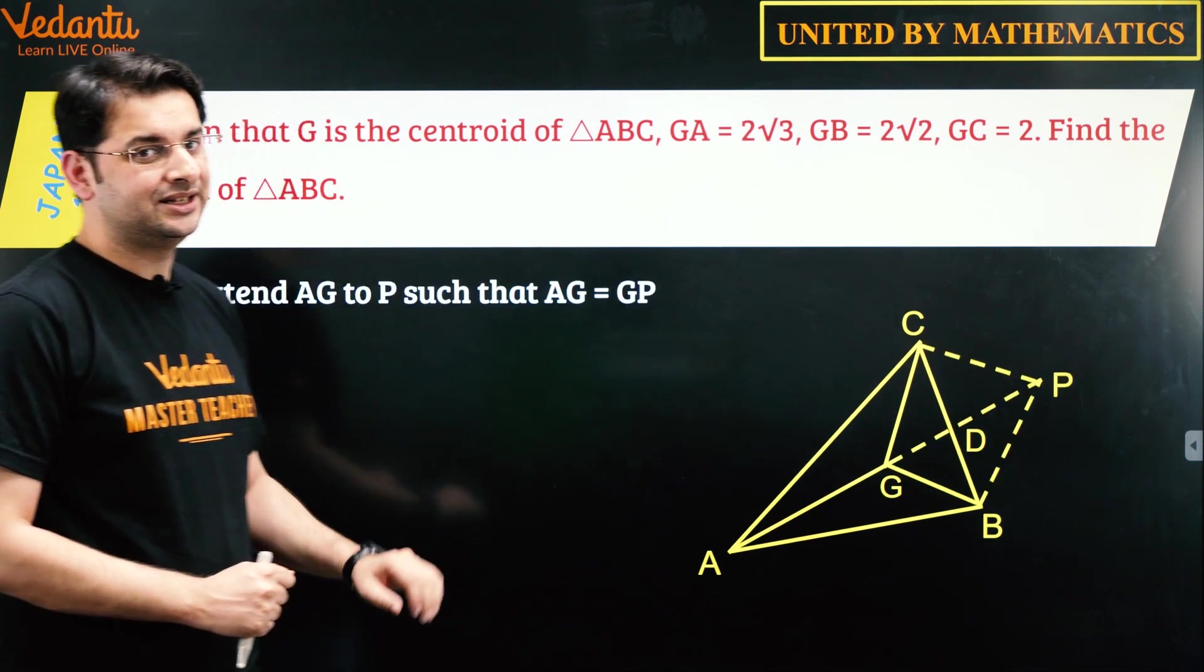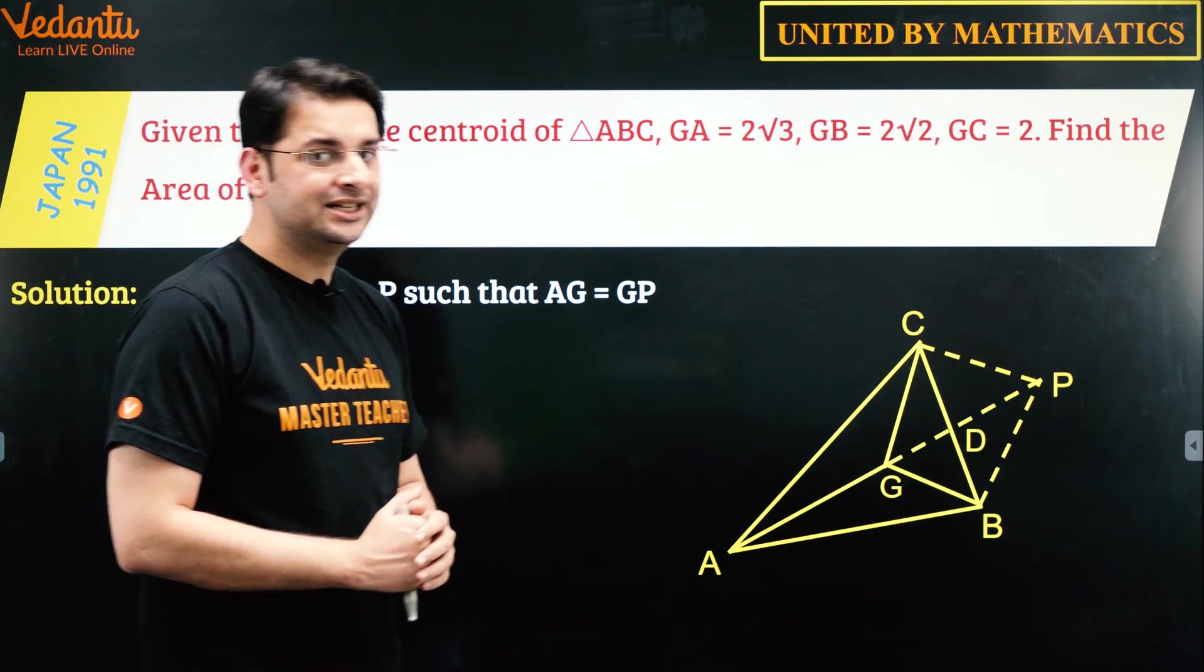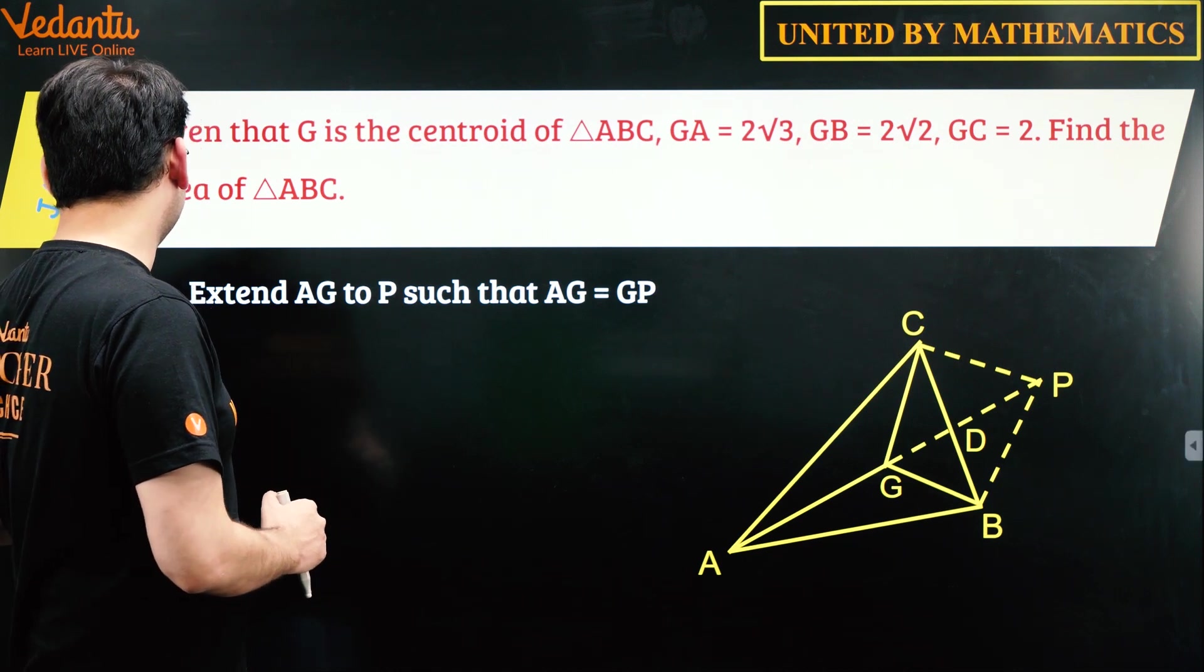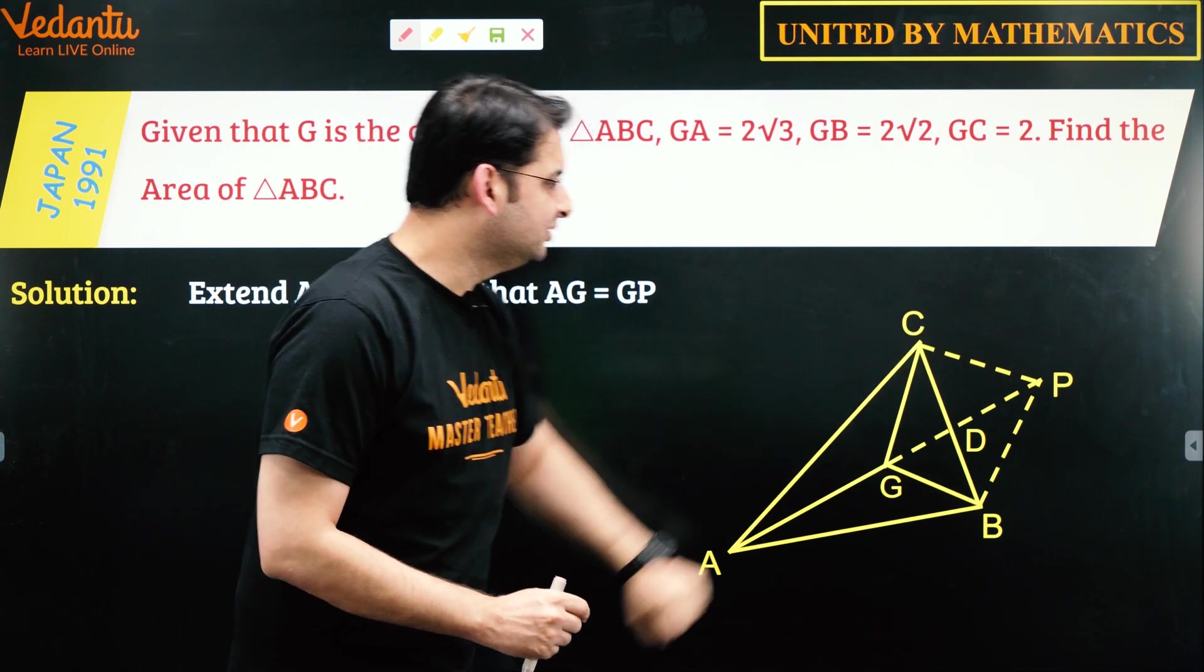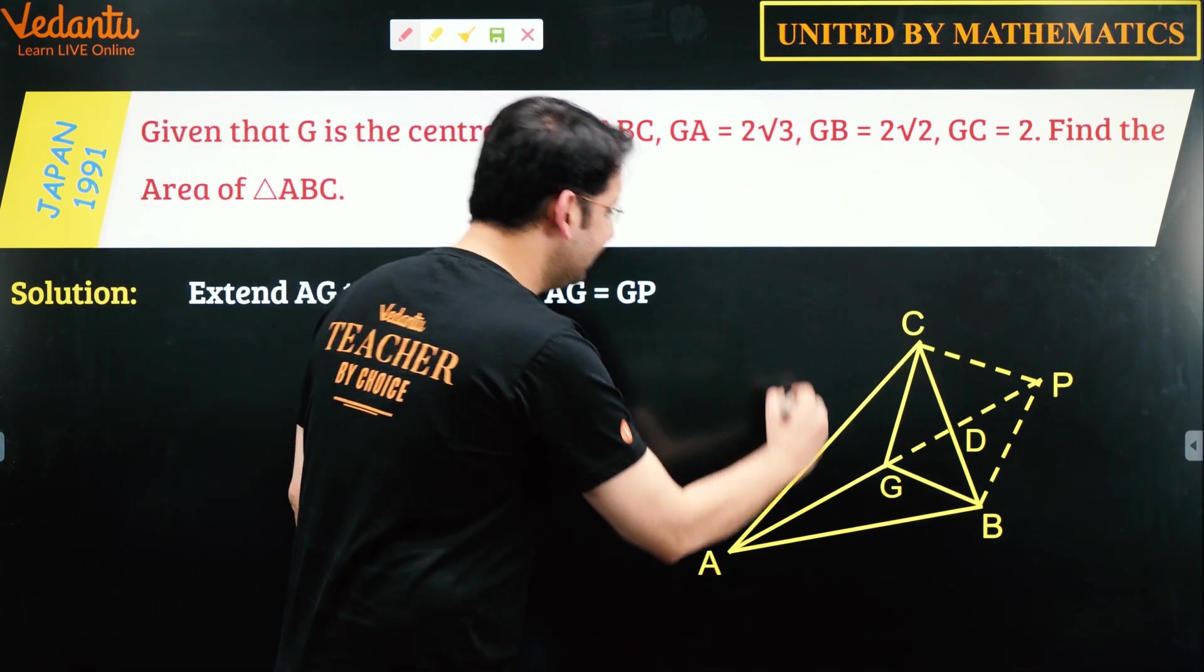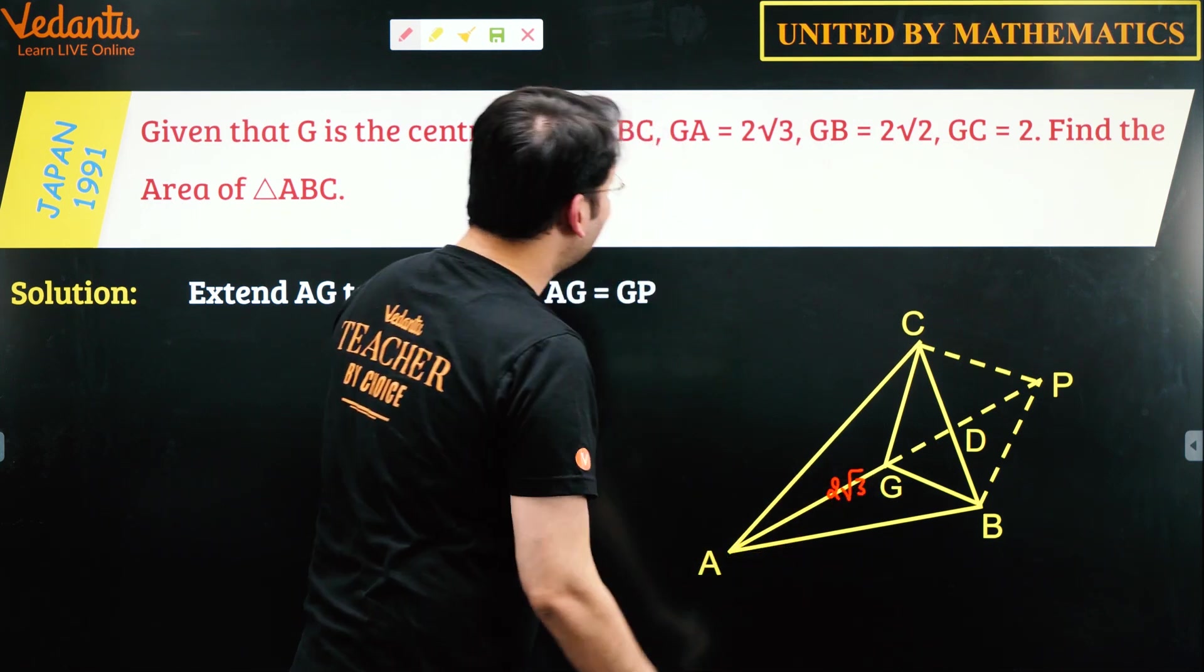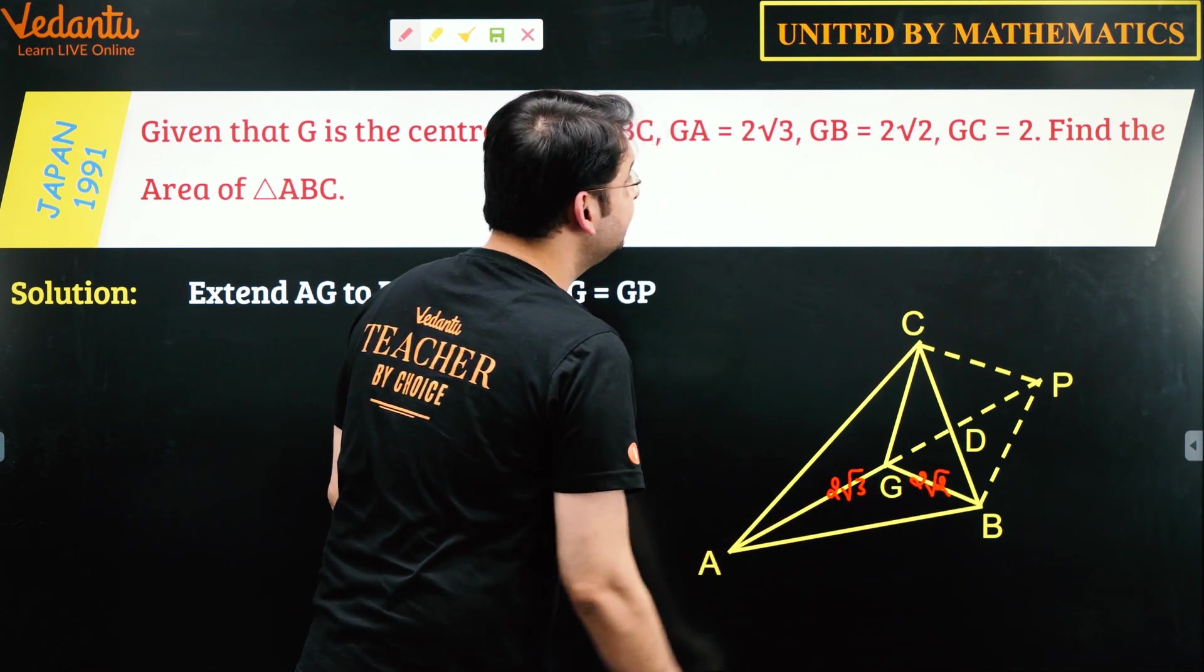So how do we proceed? One way is we construct—we extend AG to P such that AG is equal to GP, and let's see how this helps us. So AG is equal to GP and let me write all the lengths here. So GA is 2√3, we have GB as 2√2, and GC is 2.